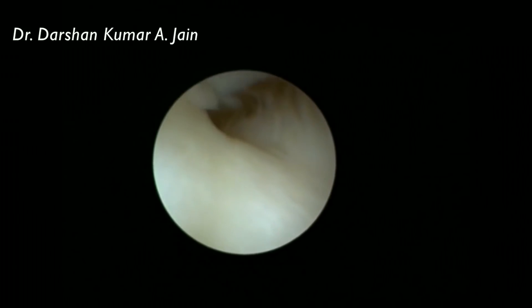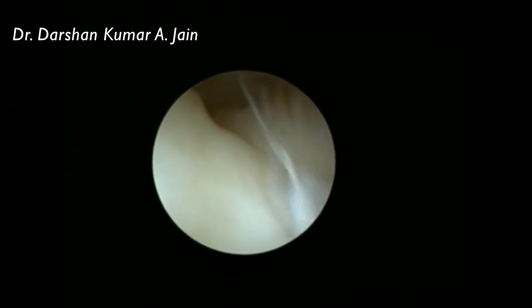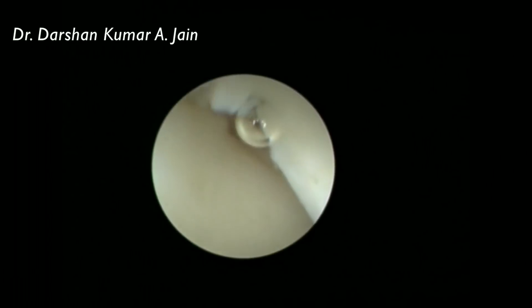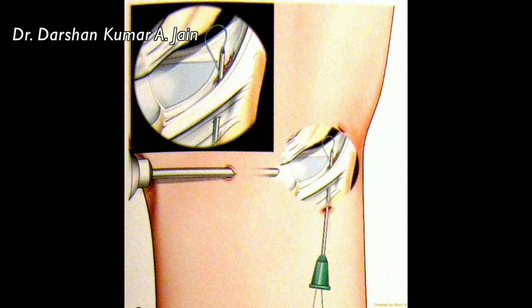As mentioned, there are two tears. One is the peripheral capsular tear, which we can see here. But we also need to rule out the foveal insertion tear, which is demonstrated by a hook test — by going underneath the TFCC and trying to lift off. There is no lift-off here, meaning the foveal insertion is intact. So now we proceed to our repair as shown here.